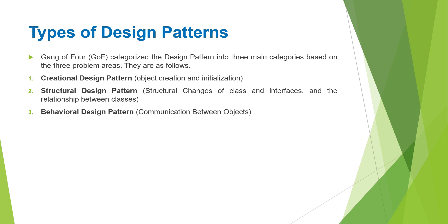Then the next question is: types of design patterns. The Gang of Four, commonly known as GOF, categorized the 23 design patterns into three main categories based on three problem areas of software architecture. The first problem area is object creation and initialization. The second is structural changes of classes, interfaces and the relationships between them. The third is communication between objects. Based on these three problem areas, the categories are: creational, structural, and behavioral design patterns.